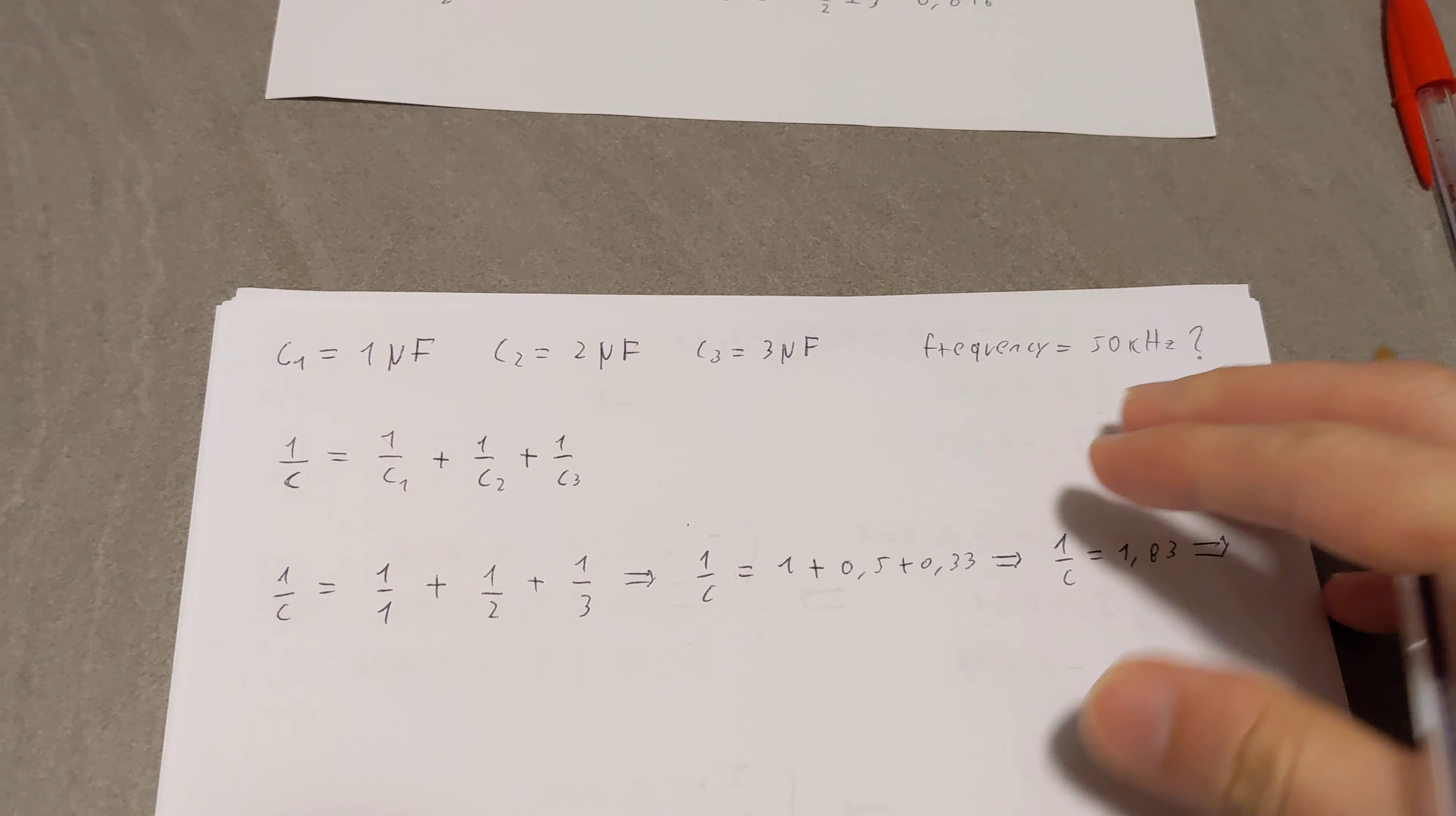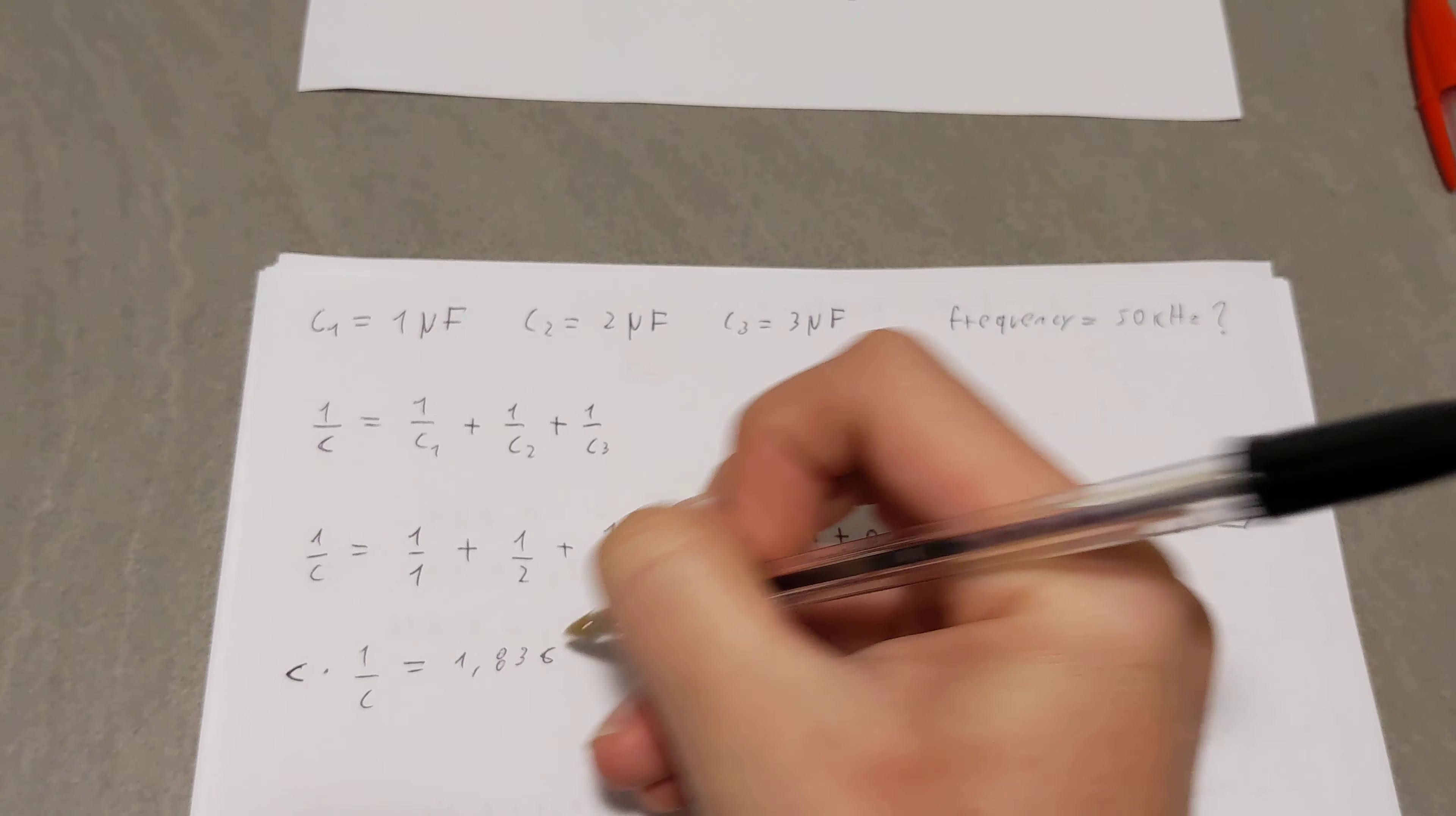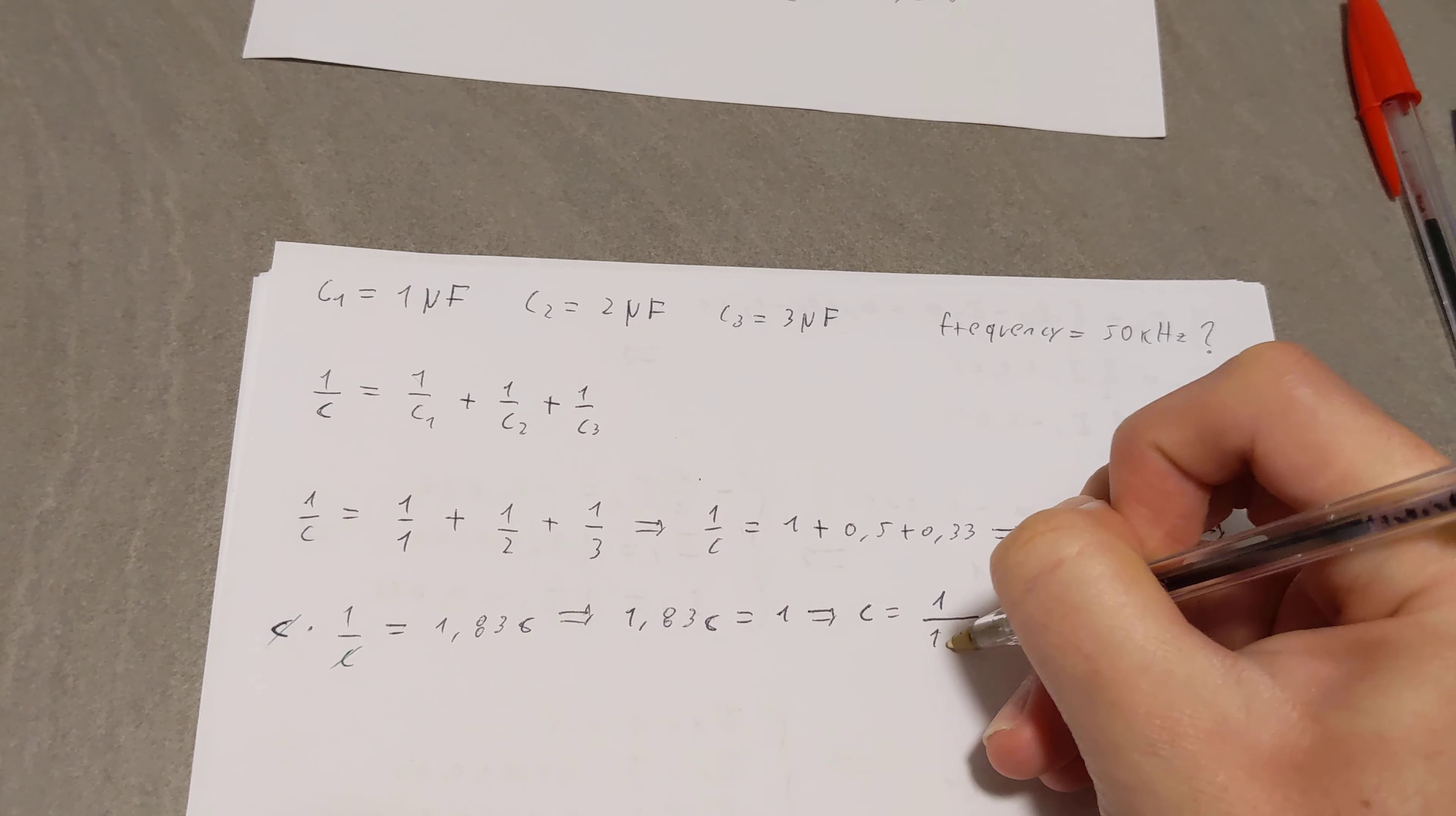Now we want to get C out of this. So what do we do? Well, we multiply on both sides by C, so we multiply C here and C here. So C times 1 over C equal to 1.83 C. Therefore, these cancel themselves out.